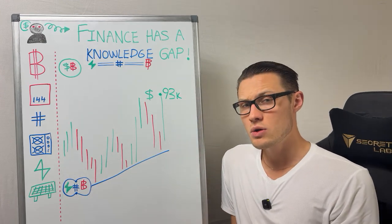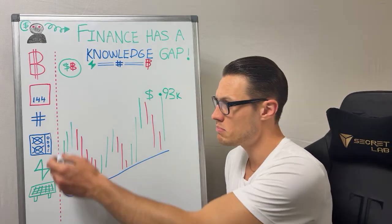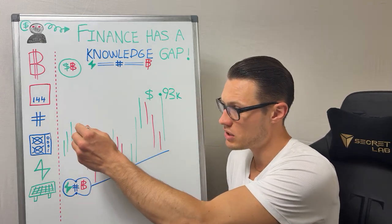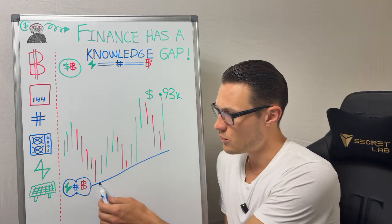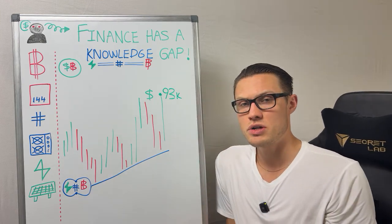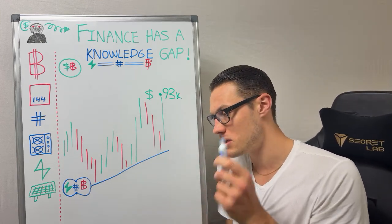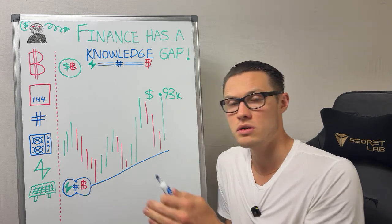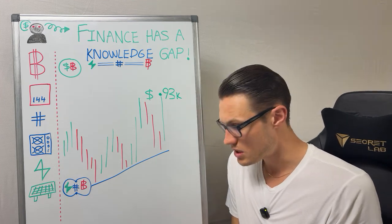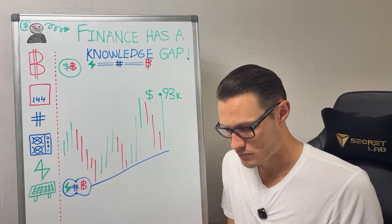And lo and behold, interestingly enough, every blow-off top of Bitcoin seems to come crashing down to the network average production cost. And this has happened every single cycle that you look at Bitcoin — and sometimes it even goes below.